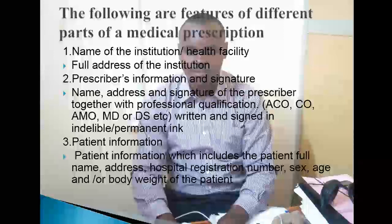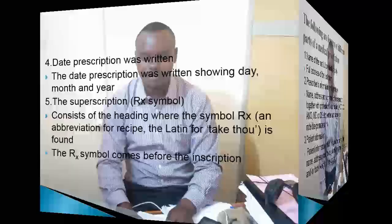The patient information also includes: the facility where they are being treated and the decision/admission number, gender — either male or female — and age and body weight of the patient, as we referenced earlier when looking at the parts of the prescription.